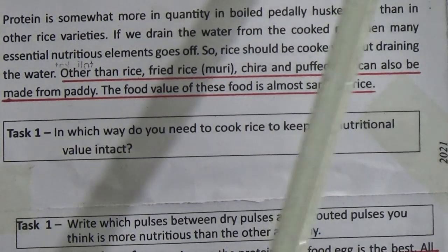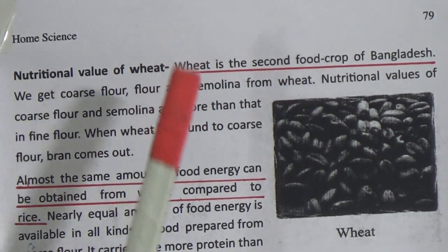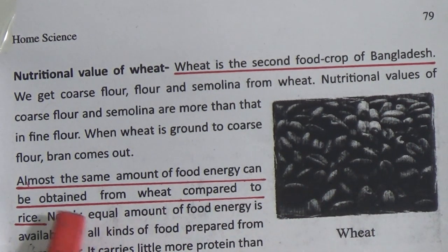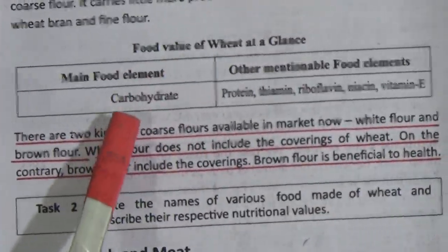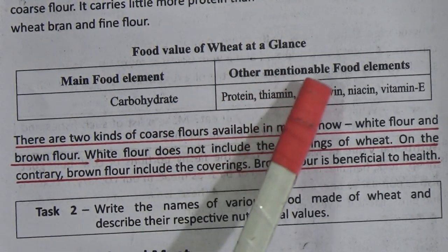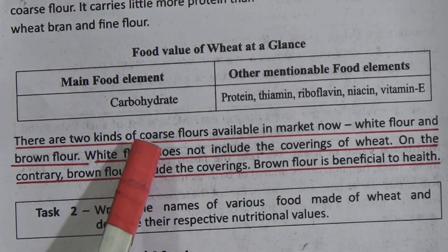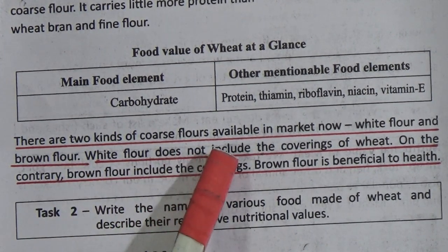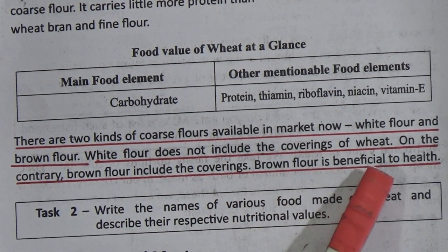The second point: nutritional value of wheat. Wheat is the second food crop of Bangladesh — rice is the first. This is a picture of wheat. Almost the same amount of food energy can be obtained from wheat compared to rice. Food value of wheat at a glance — main food element is also carbohydrate, and other mentionable elements are protein, thiamine, riboflavin, niacin, and vitamin E. There are two kinds of flour available in the market: white flour and brown flour. White flour does not include the coverings of wheat; on the contrary, brown flour includes the coverings. So brown flour is more beneficial to health.